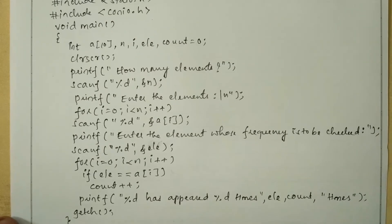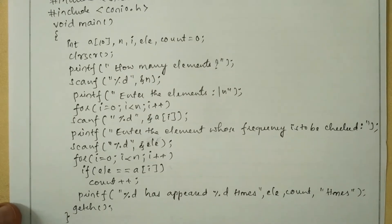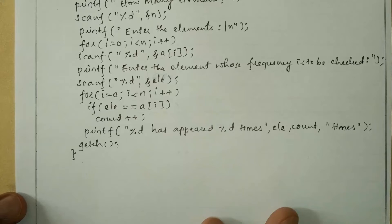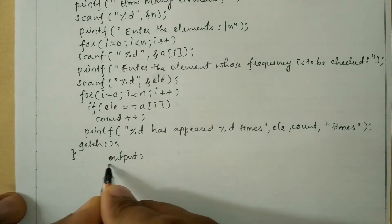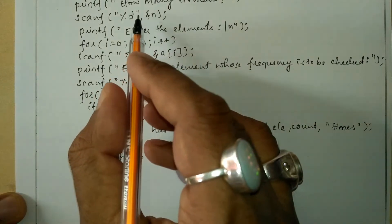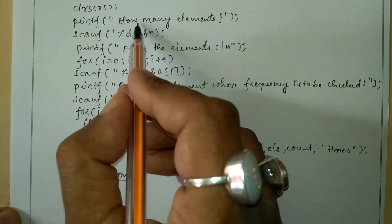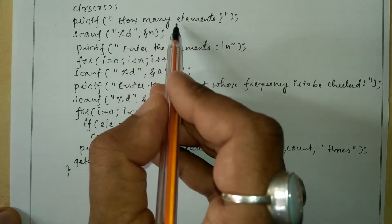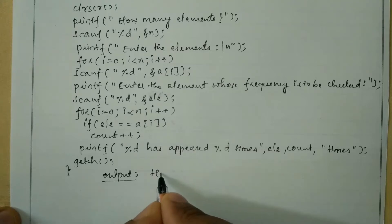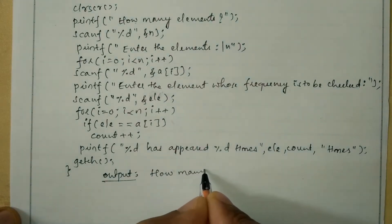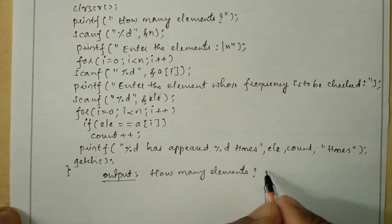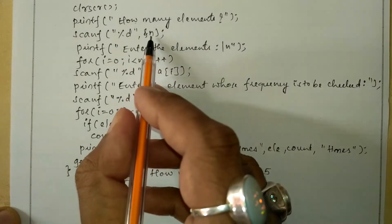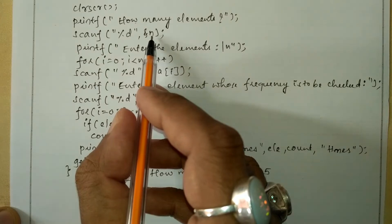So let us take an example and write the output. When we compile and run this program it will ask the user to enter how many elements. For example I am going to enter 5, so here n is equated with value 5.